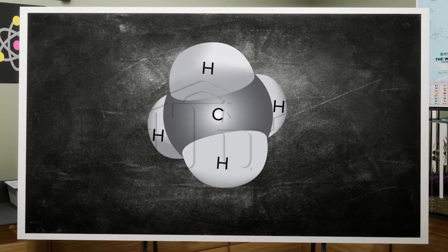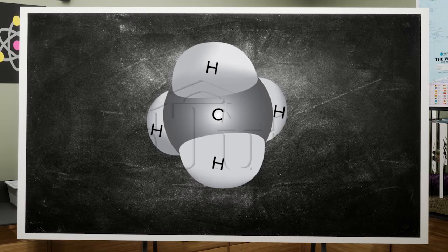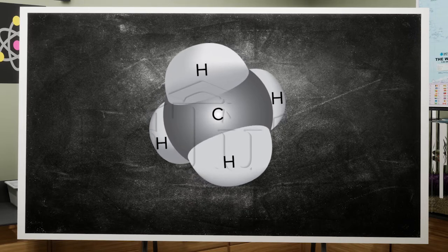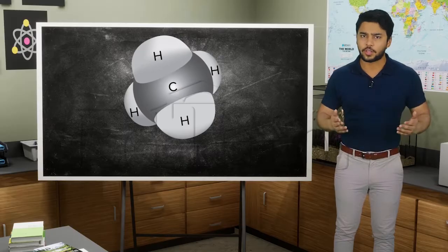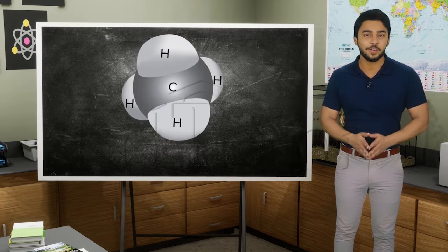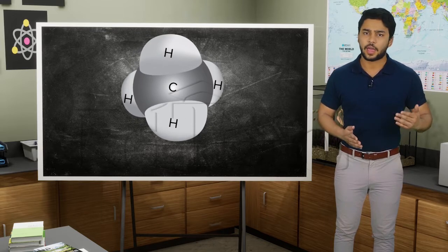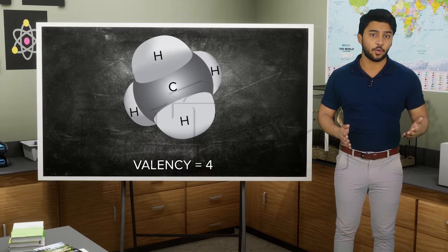Methane, the last example, its structure shows that four hydrogens are bonded to one carbon, or that four bonds are maintained between the two. Hence the valency of carbon is four.